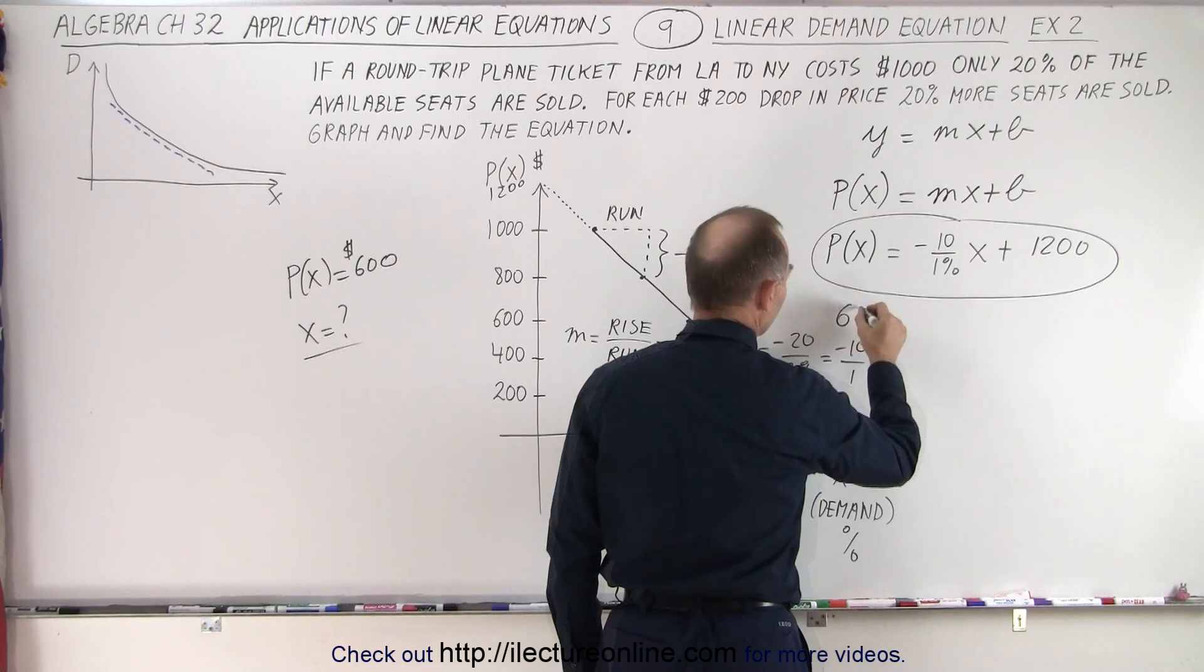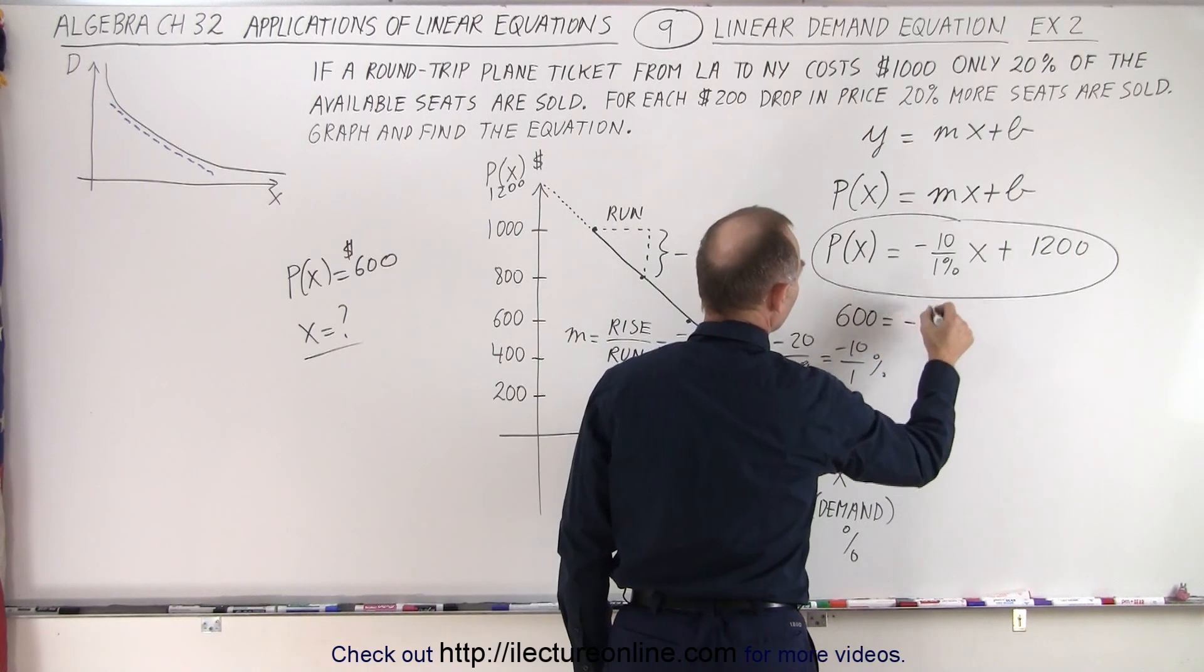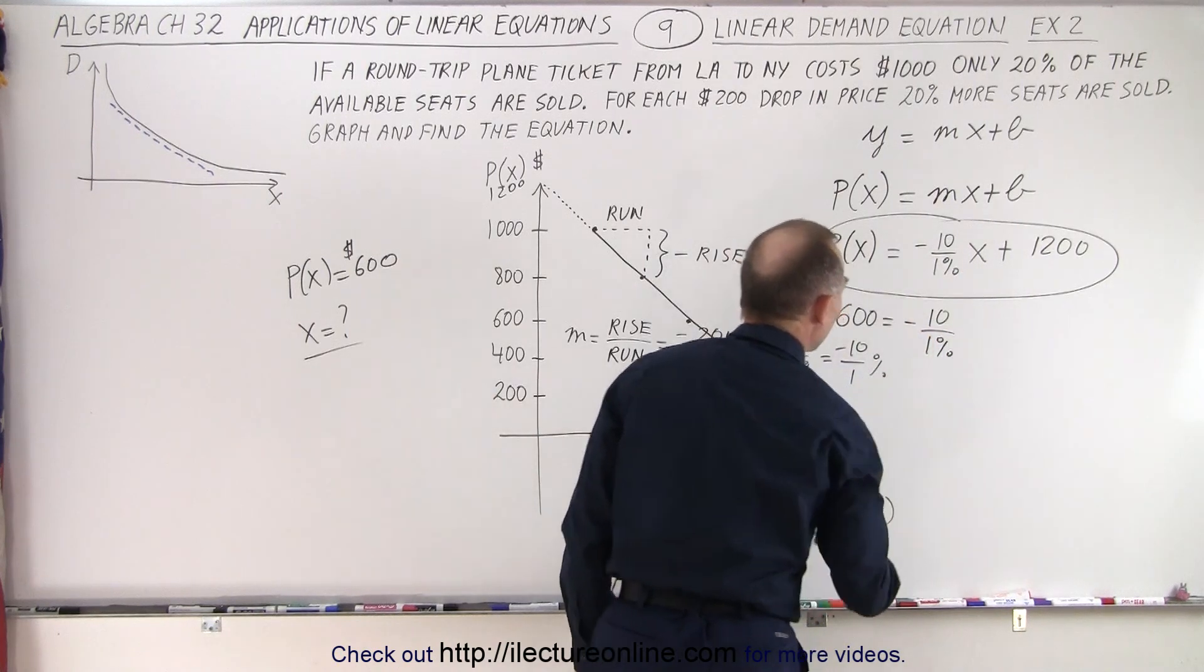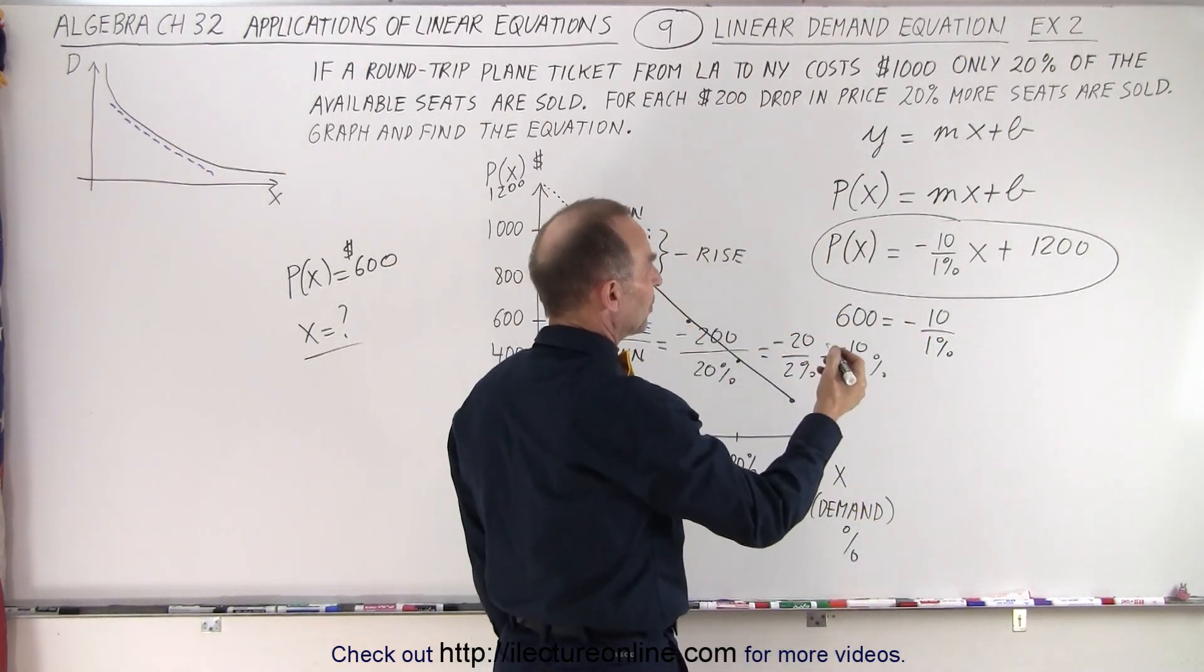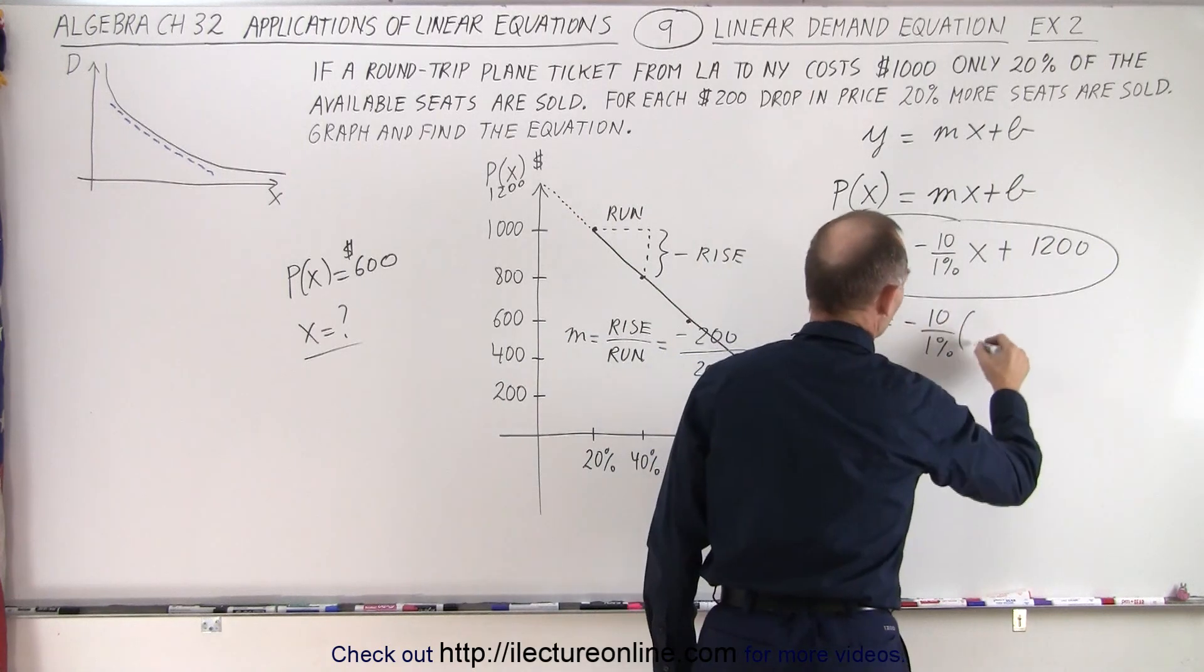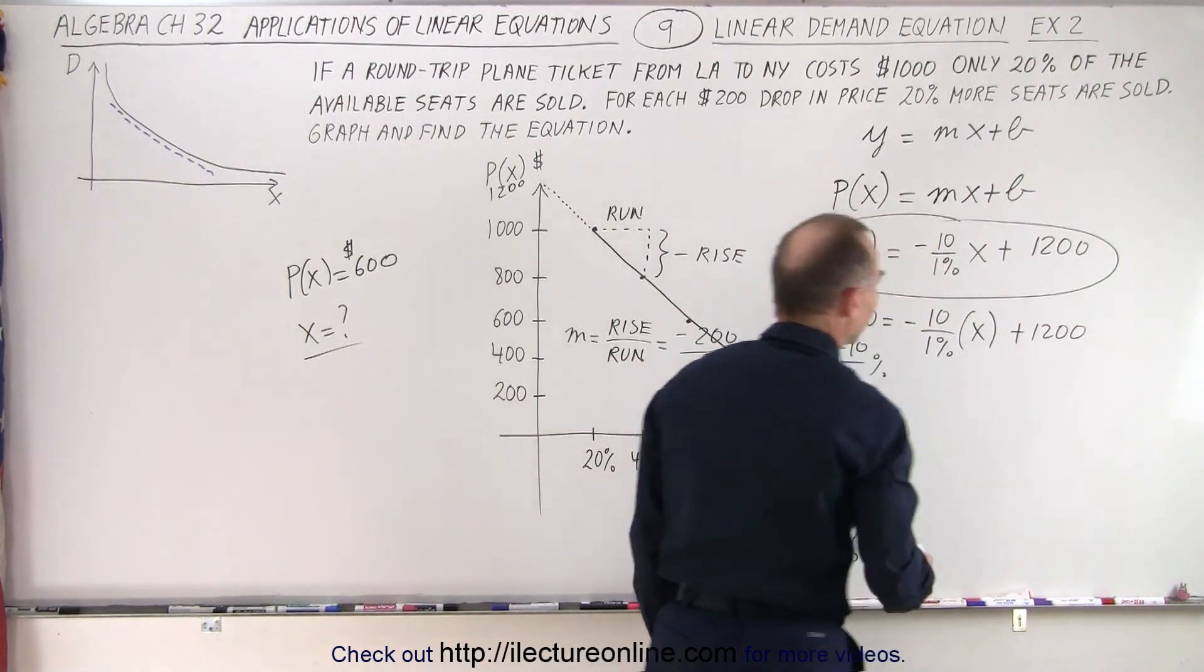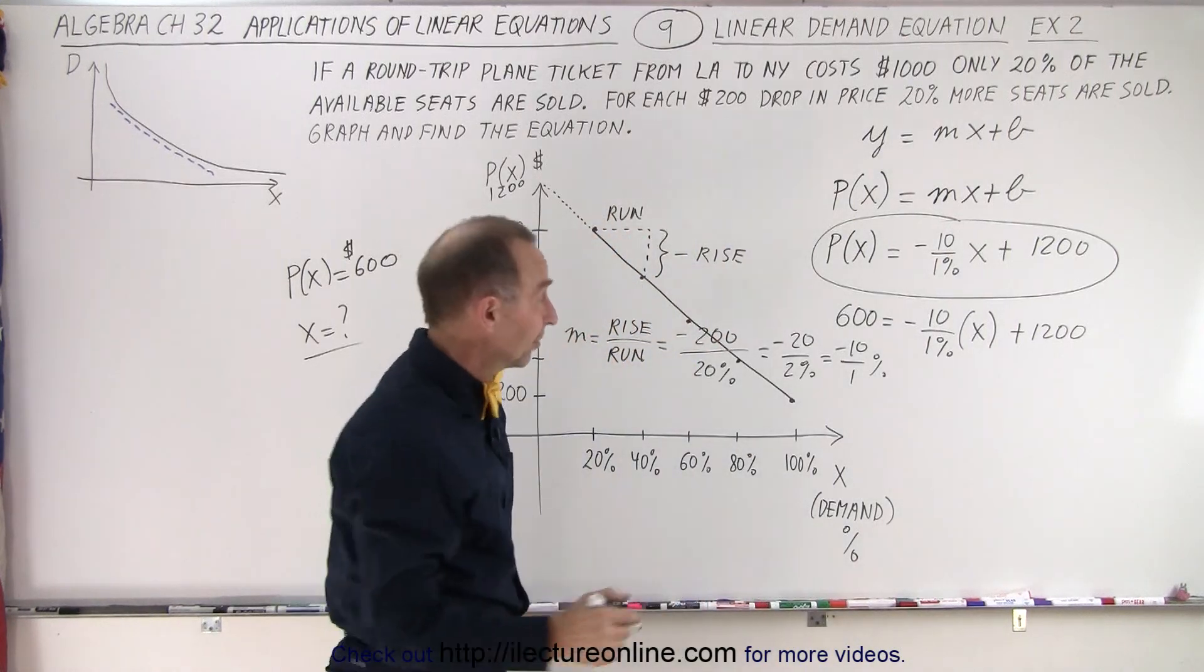P of x equals 600. 600 is equal to minus 10 over 1% times the demand. So what we're trying to do here is we're trying to find x. So what is x going to be equal to plus 1,200?